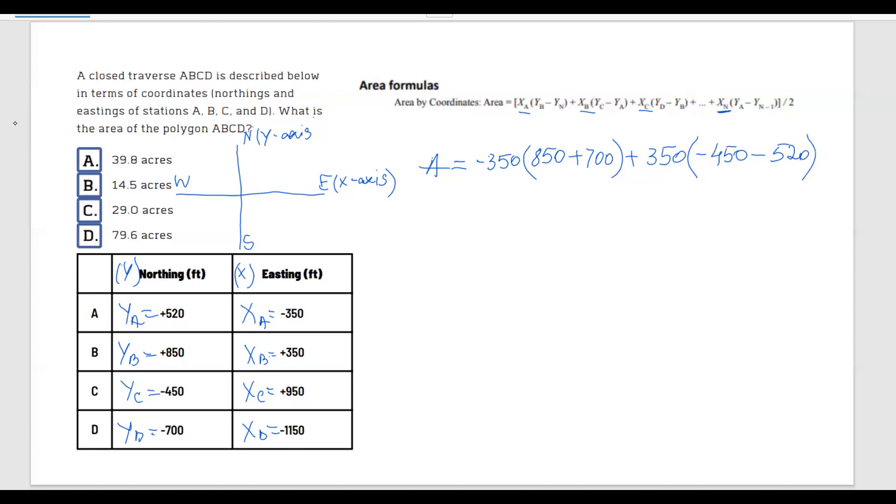Next, plus xB, which is 350, multiplied by yC, which is -450, minus yA is 520.